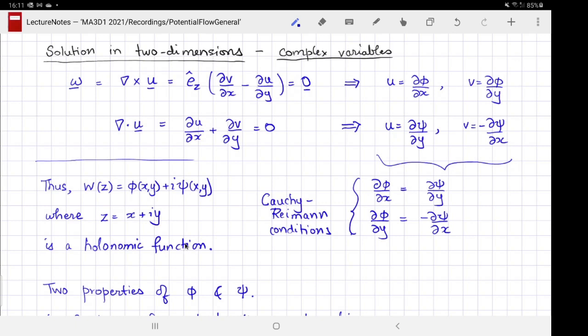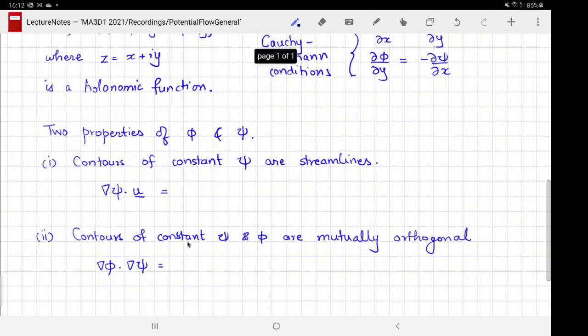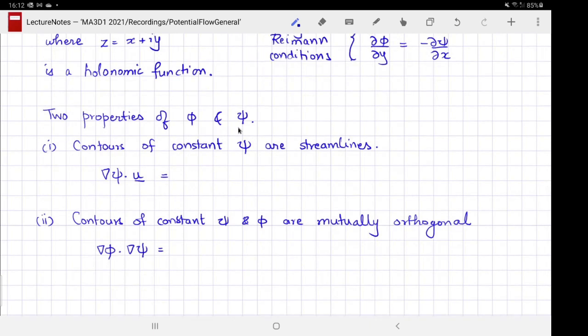Now, the trick is to satisfy the boundary conditions. If you can write down the holonomic function that satisfies the boundary condition, you're essentially done. That's going to be our strategy where we are going to approach it more systematically in section 6.3 and 6.4 and so on. But in this video, we are going to look at two properties of these scalar functions phi and psi that we have introduced.